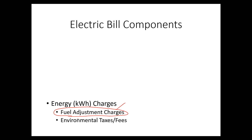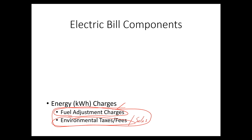The second component of energy charges is environmental taxes and fees, which you'll find on many utilities — it might be upwards of 15%. You might also have sales tax. Every kilowatt-hour you use, they're going to charge you based on that. The more kilowatt-hours you use, the higher these charges and fees are going to be.